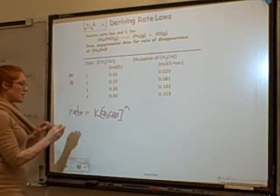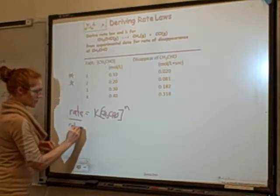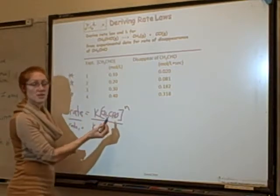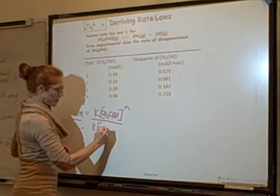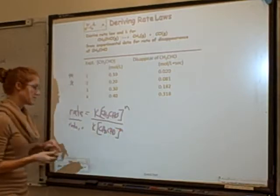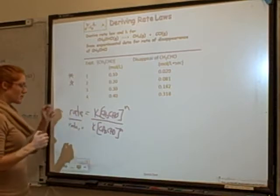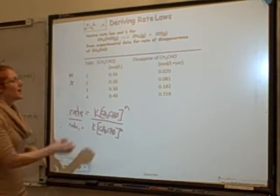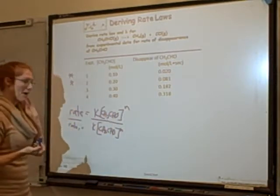I'm going to say that the rate of experiment 2 over the rate of experiment 1 equals k times the concentration in experiment 2 to the power of n, over k times the concentration in experiment 1 to the power of n. I chose experiment 2 because now I have 0.2 over 0.1, which gives me a whole number instead of a fraction.